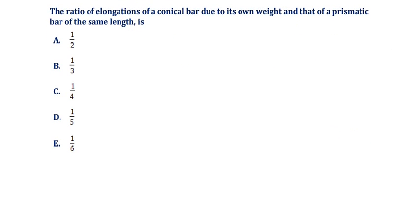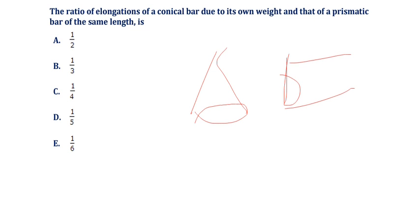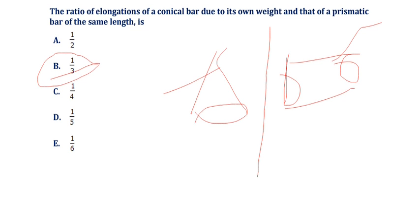The ratio of elongations of a conical bar due to its own weight to that of a prismatic bar of the same length is one-third (1/3). Please remember: the ratio of elongations of conical bar to prismatic bar is 1/3.